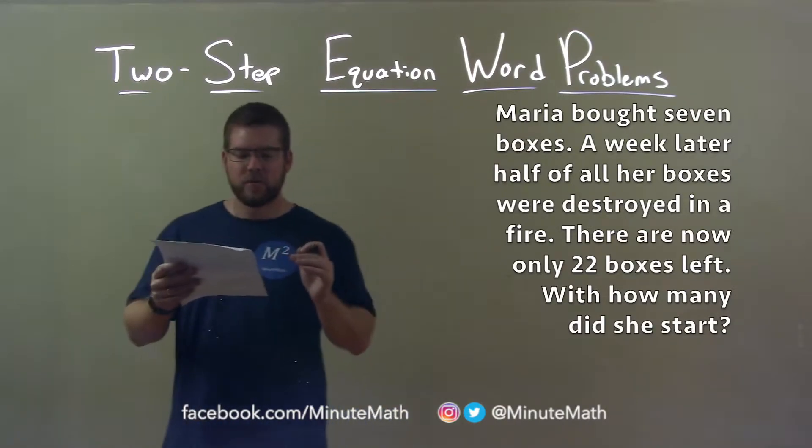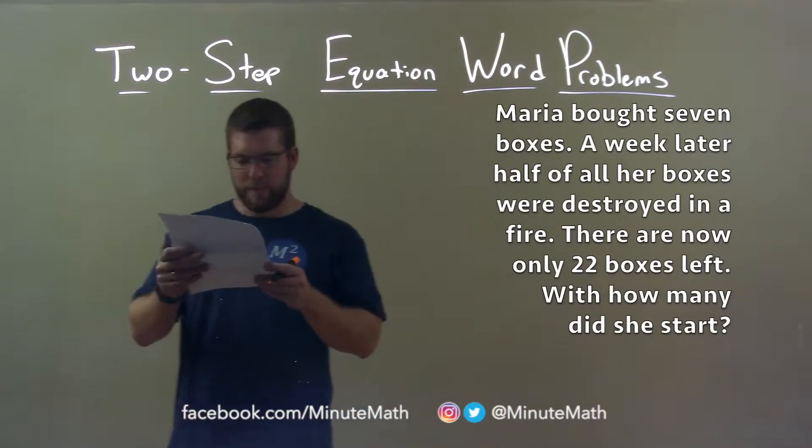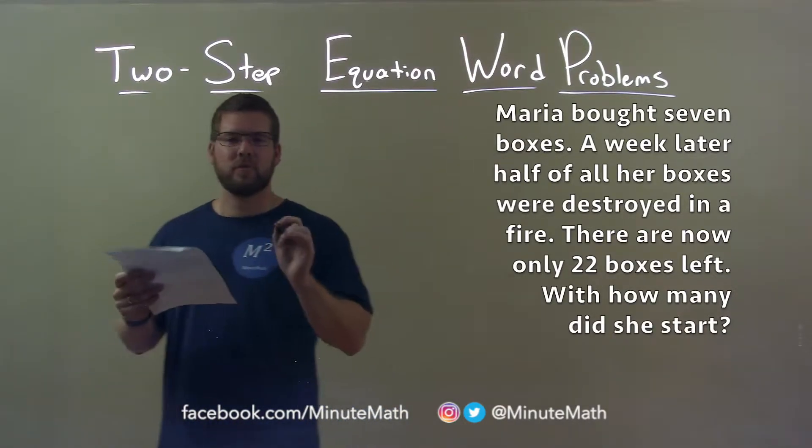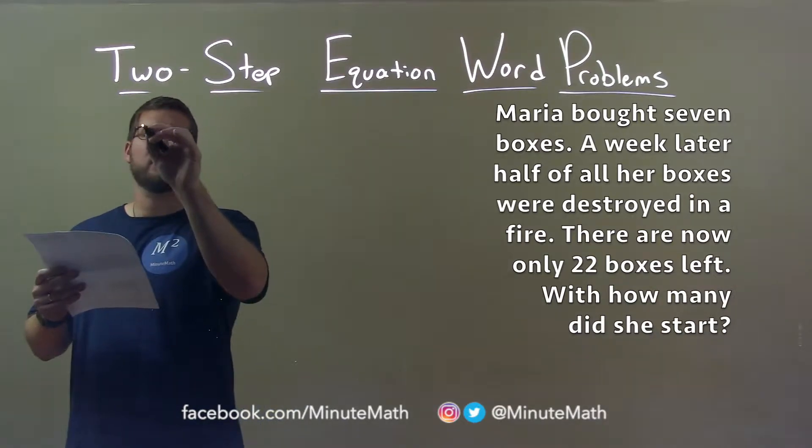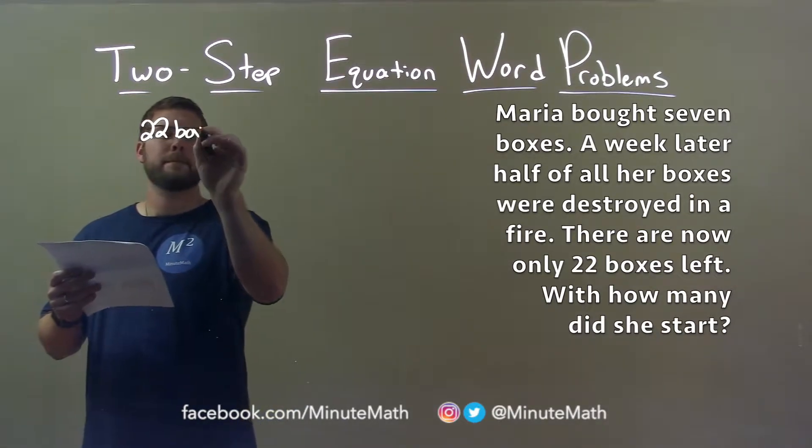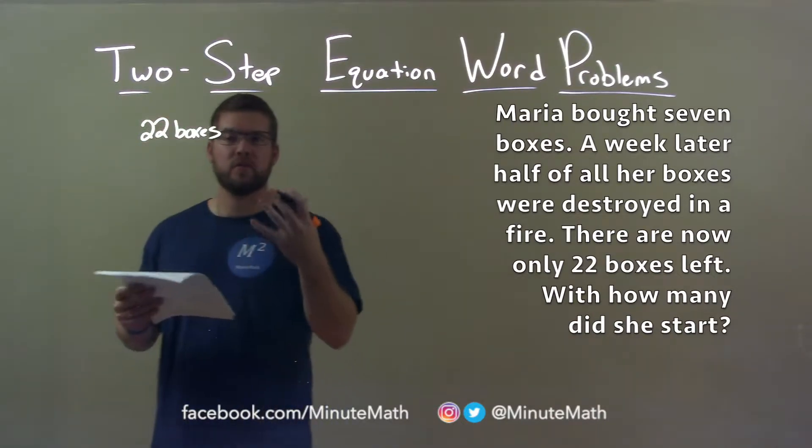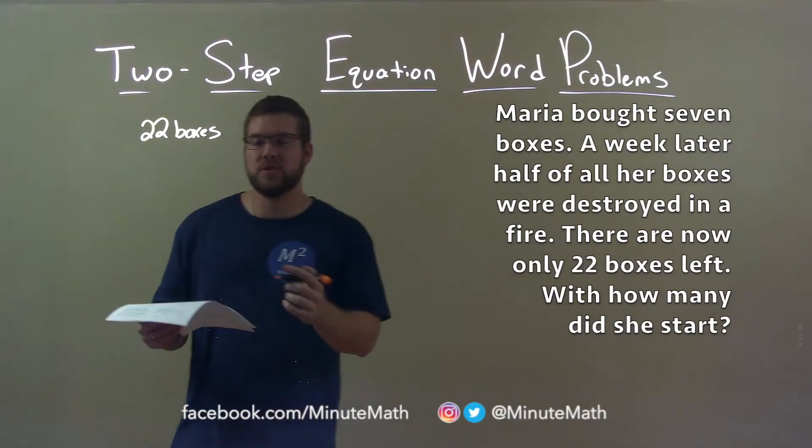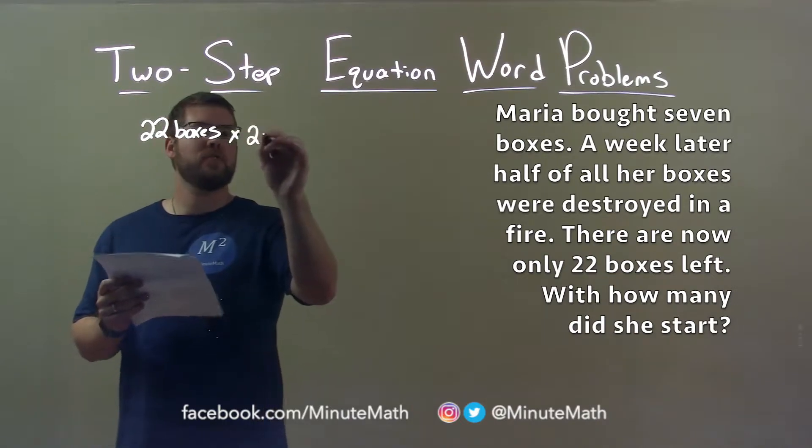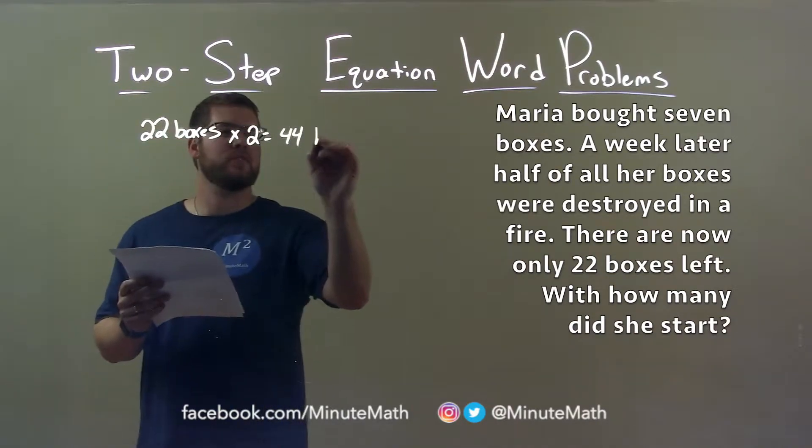After the fire, she had 22 boxes. They said that was after half of them got destroyed. So obviously, if I had half, I was multiplying by two. Multiply that by two, and we have 44 boxes she started with.